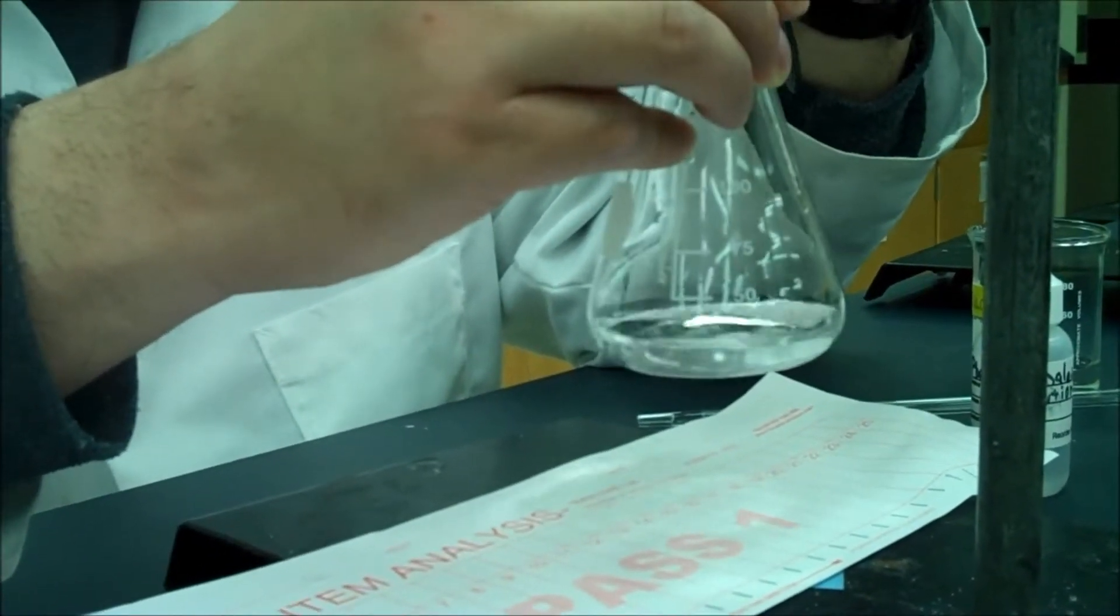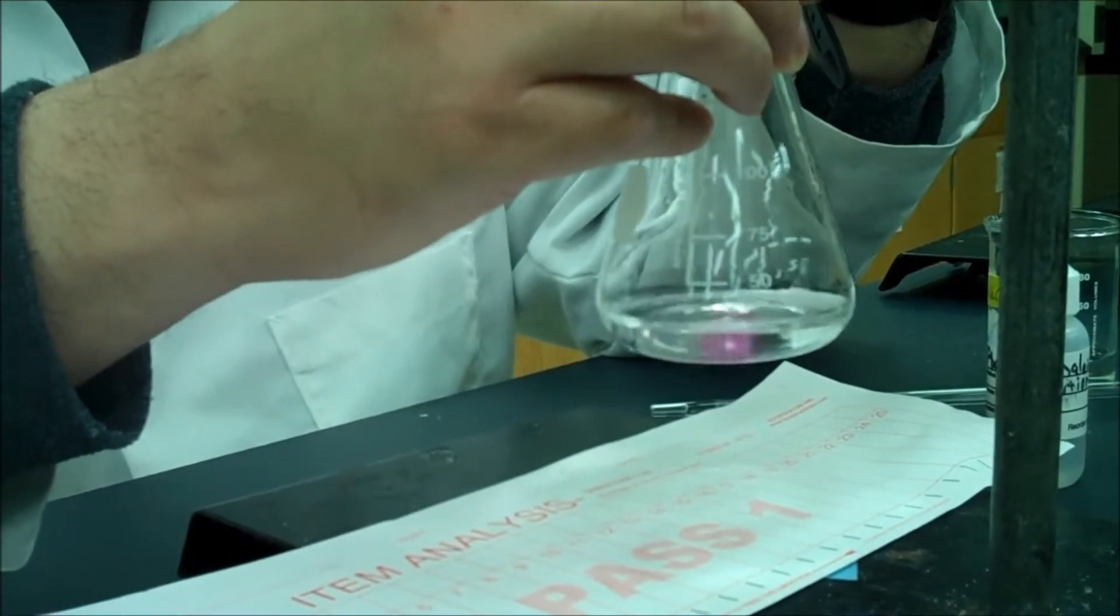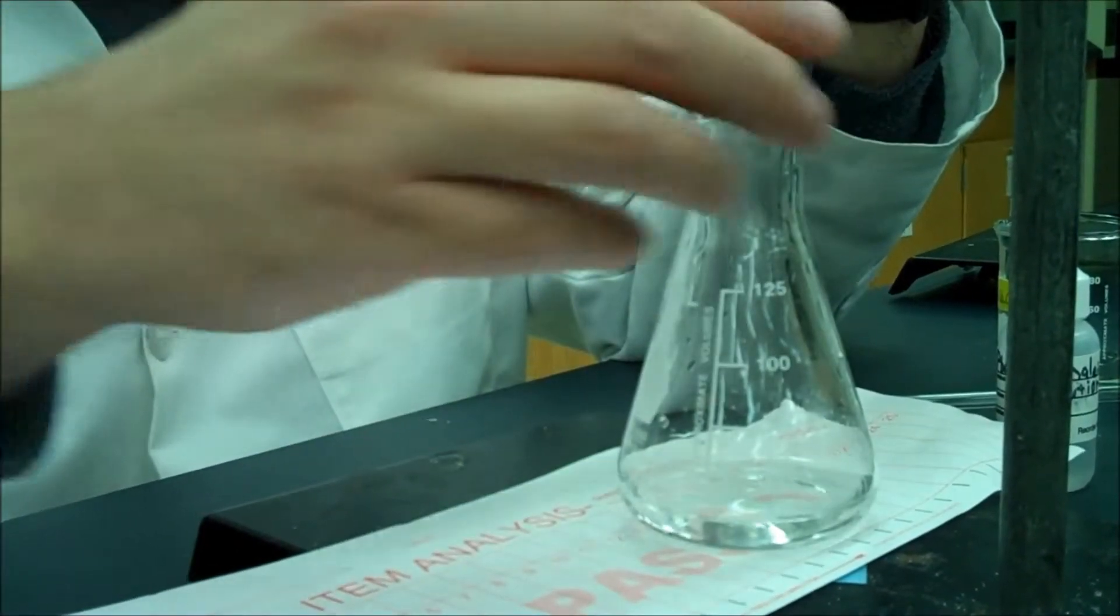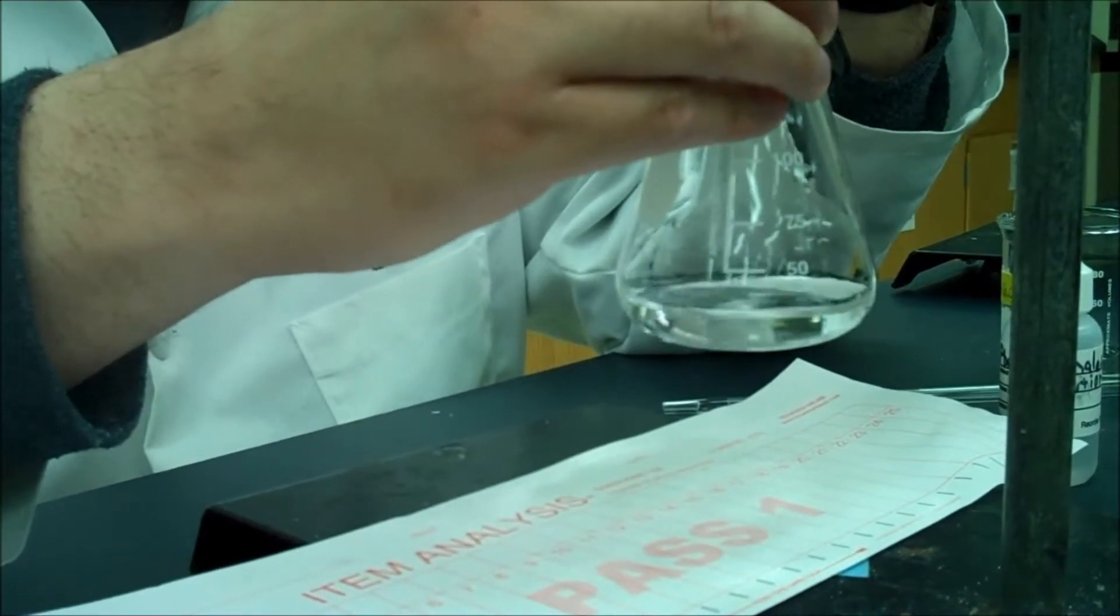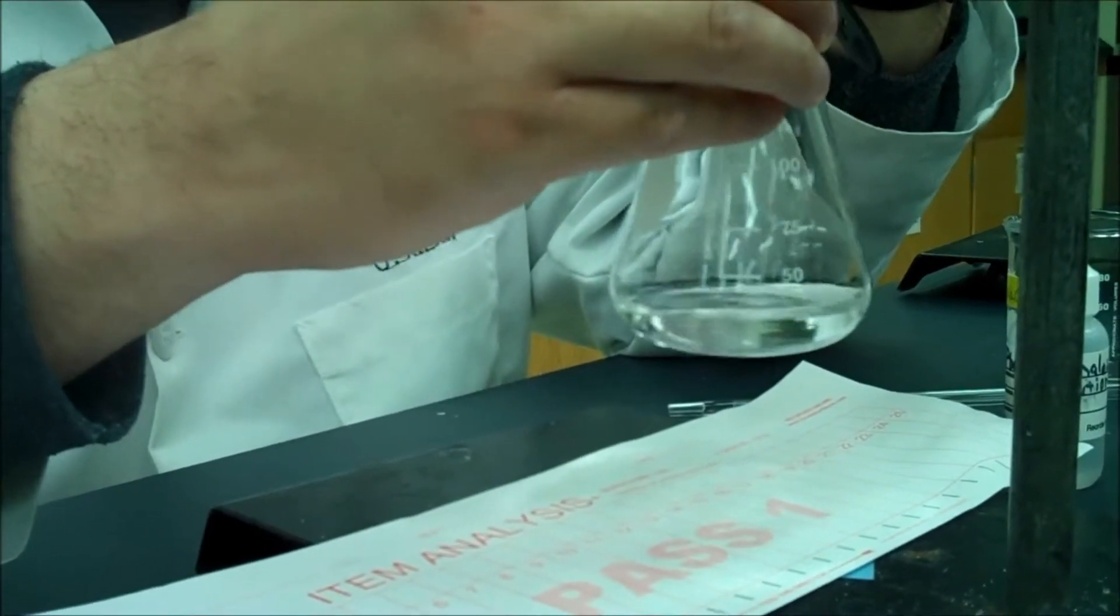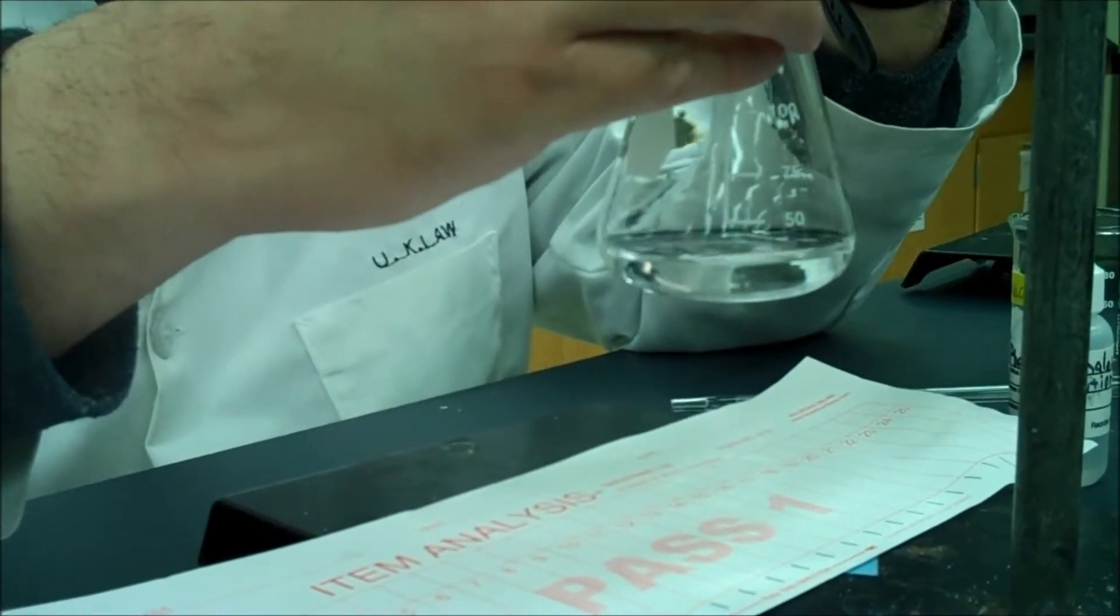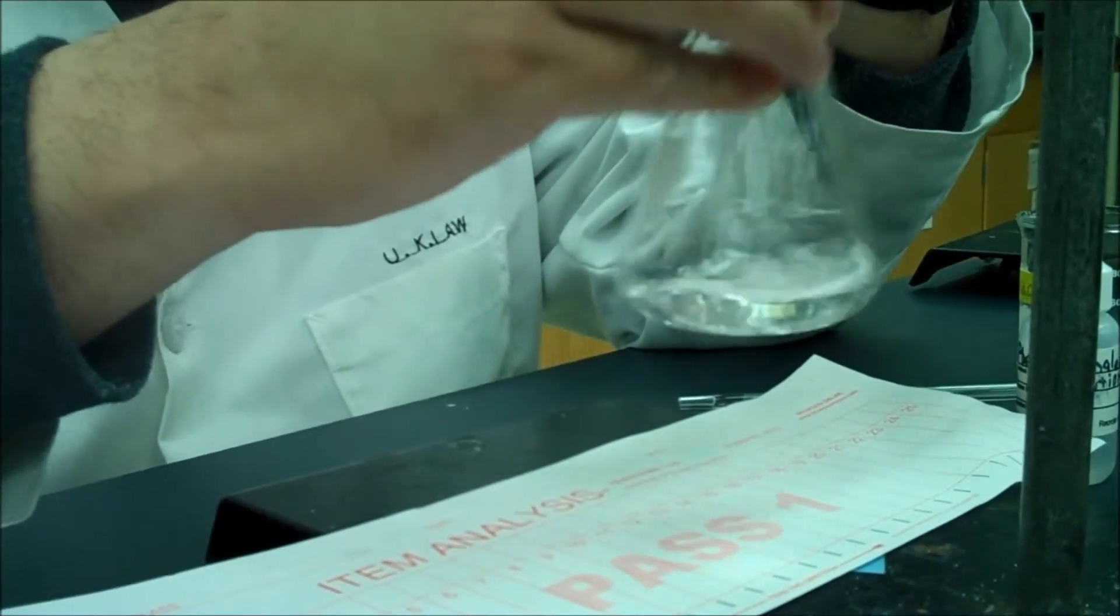Just put it in. And it helps to have a white piece of paper here, just so that you can see when it actually turns pink. You want the faintest shade. Ideally, you want to see the faintest shade of pink.